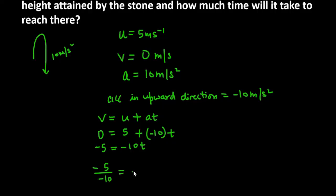And -10 goes to division. So minus and minus cancel. You get 5/10 which is 1/2, and the value is 0.5 seconds. The time is 0.5 seconds.